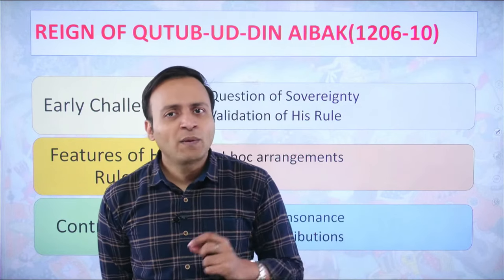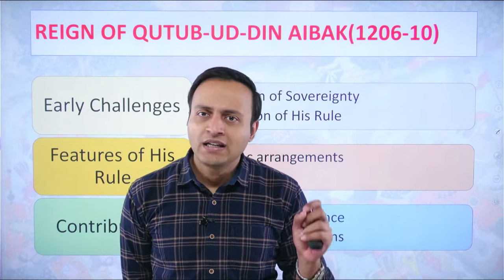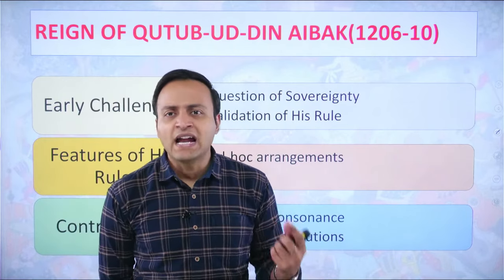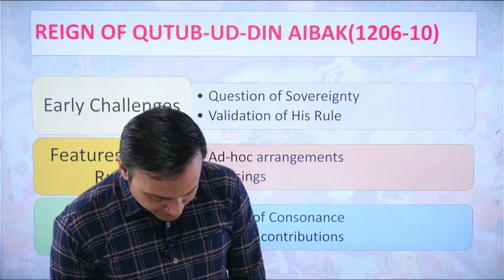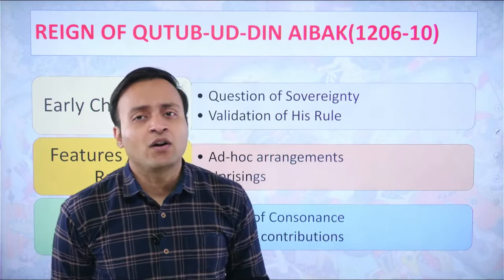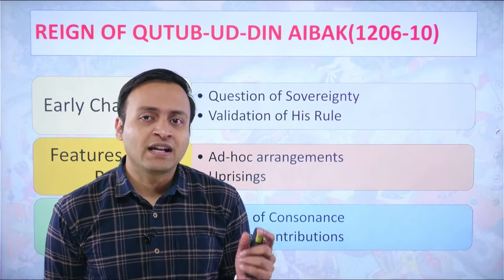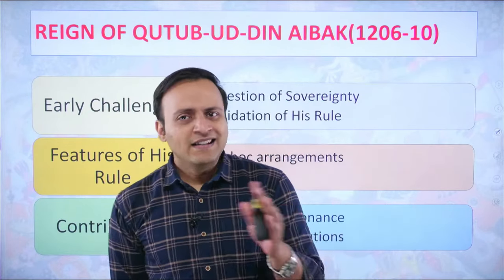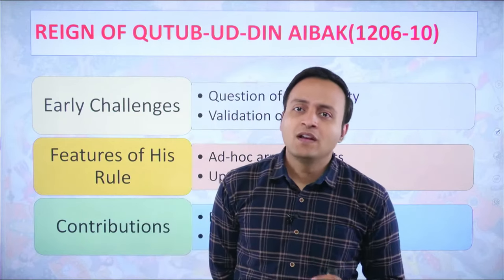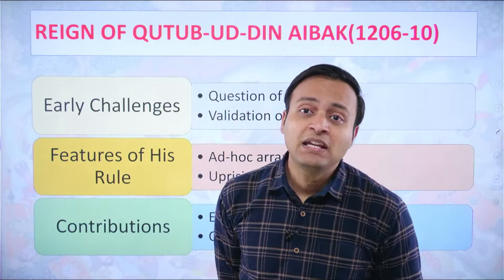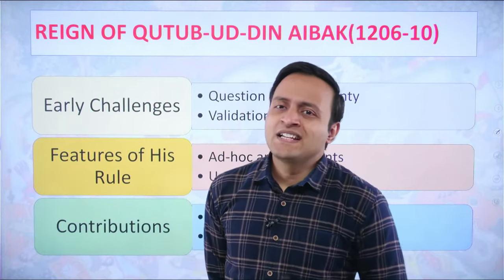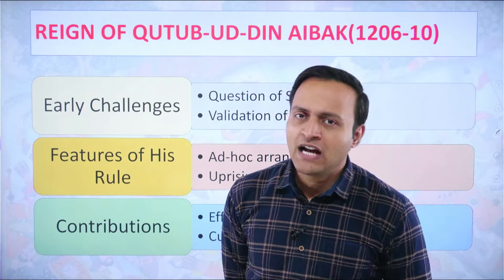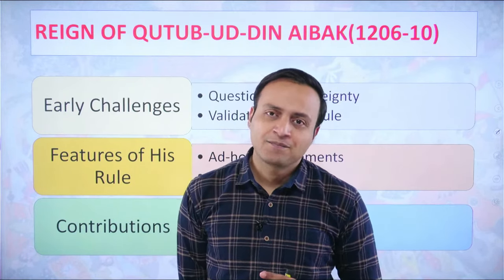Therefore, as per Islamic rule, he could not officially succeed to any type of sultanate or throne. That's why Qutbuddin Aibak is not regarded as a legitimate Sultan, despite certain historians claiming he had received affirmation from the Khalifa — but there is hardly any concrete evidence in this regard. Satish Chandra, Professor K.A.S. Nizami, and Muhammad Habib — all these historians do not regard Qutbuddin Aibak as a legitimate Sultan of Delhi Sultanate in the truest sense.